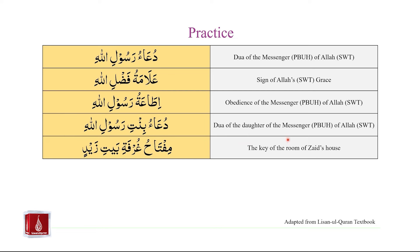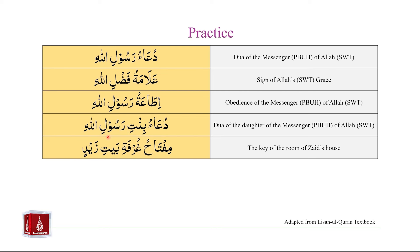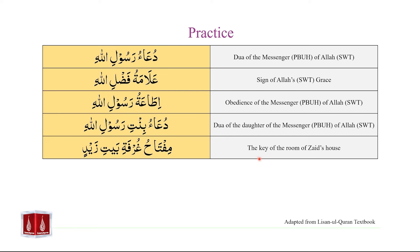Another example is: دعاء بنت رسول الله — 'the dua of the daughter of the messenger of Allah.' Here we have Mufrad plus Mufrad plus Mufrad plus Mufrad. دعاء meets criteria for Mudhaaf — no Al, no Tanween. بنت serves as Mudhaaf Ilai for دعاء because it is in the Jar status. بنت also serves as Mudhaaf because there is no Al and no Tanween. رسول serves as Mudhaaf Ilai for بنت because it is Majroor, and also serves as Mudhaaf for الله — no Al, no Tanween. Finally, الله is Mudhaaf Ilai because it is Majroor.